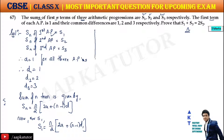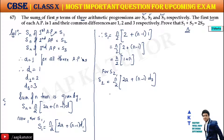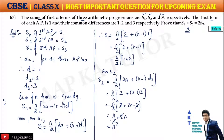Putting the values: S1 = n/2 · (2a + (n−1)·1) = n/2 · (2 + n − 1) = n/2 · (1 + n) = n². Similarly for S2: S2 = n/2 · (2a + (n−1)·D2) = n/2 · (2 + (n−1)·2) = n/2 · (2 + 2n − 2) = n/2 · 2n = n².